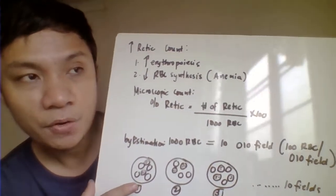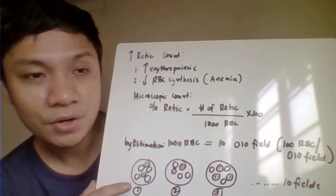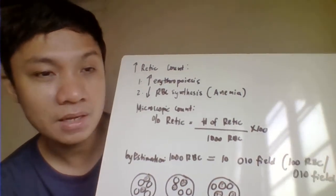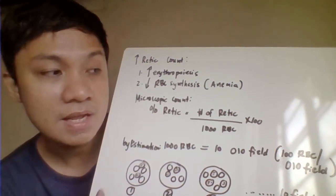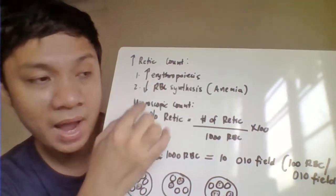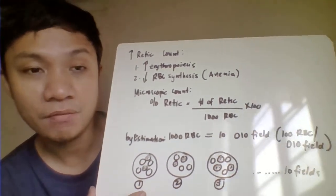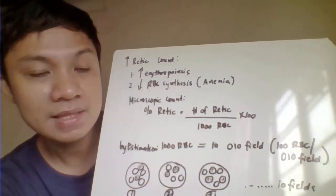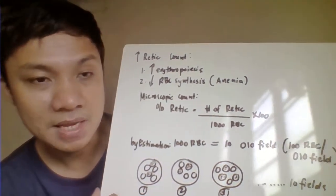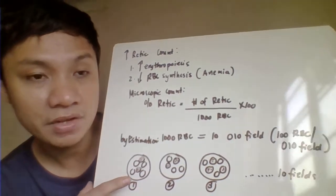You can also have an increased reticulocyte count in decreased RBC synthesis in the case of anemia — although this is more of a pseudo or false increase. When doing the microscopic counting, you count the number of reticulocytes per 1000 RBCs, then multiply by 100 to get the percentage reticulocyte count. You count 1000 RBCs and identify how many of those are reticulocytes, then multiply by 100.